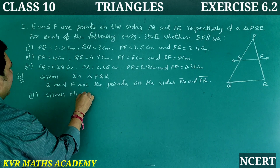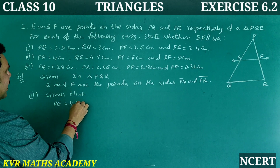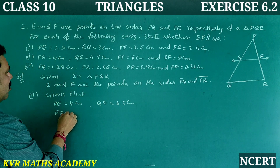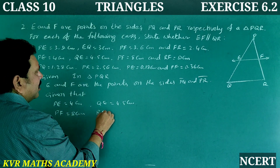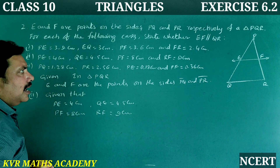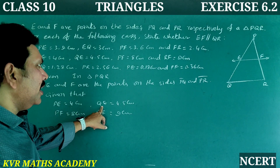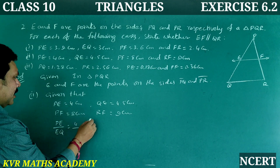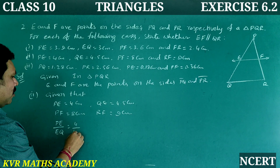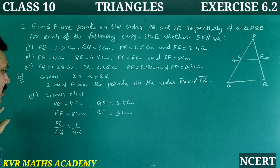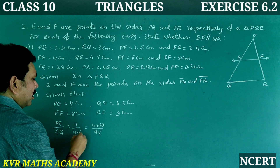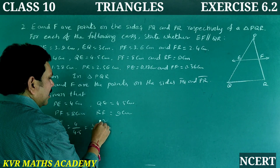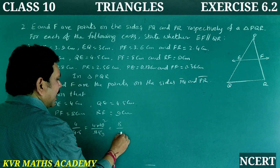Case 2 — Given: PE is equal to 4 centimeters, QE is equal to 4.5 centimeters, PF is equal to 8 centimeters, and RF is equal to 9 centimeters. PE by EQ: 4 by 4.5, multiply by 10 over 10 gives 40 by 45, which equals 8 by 9. PF by FR: 8 by 9.